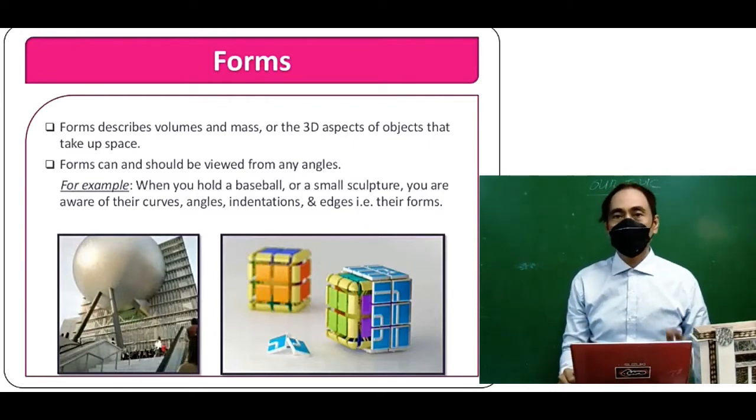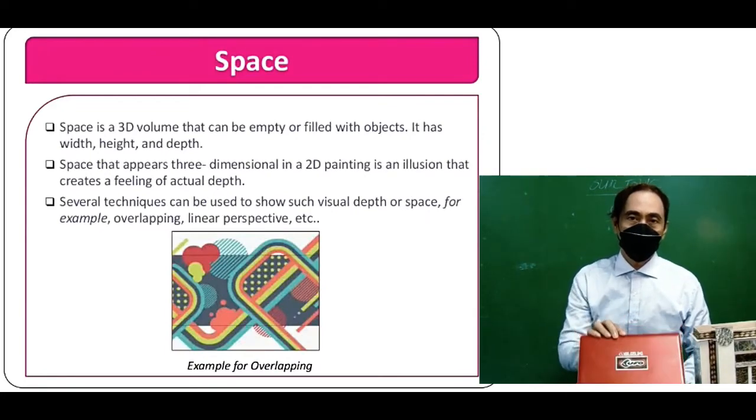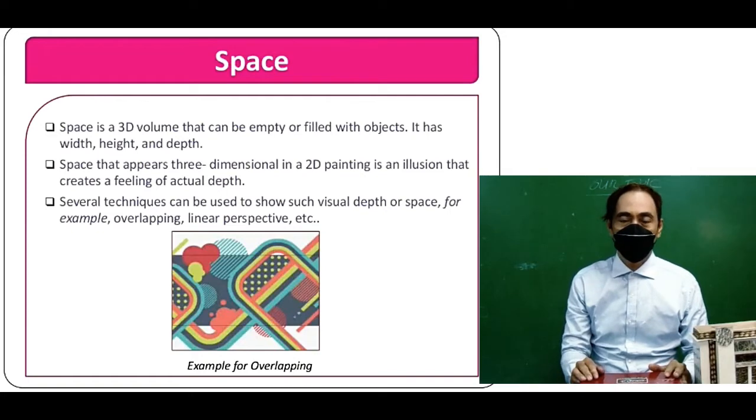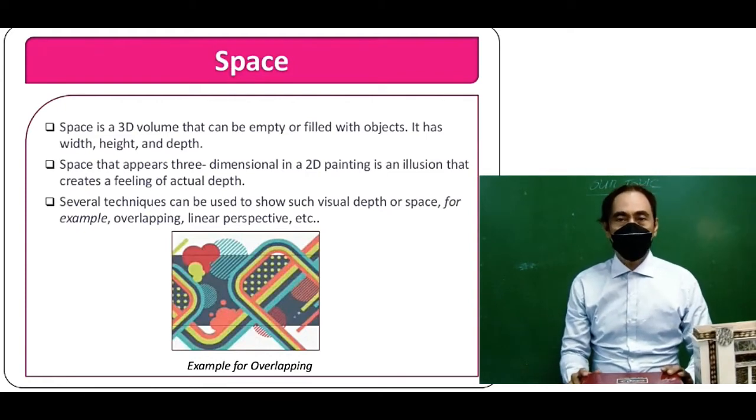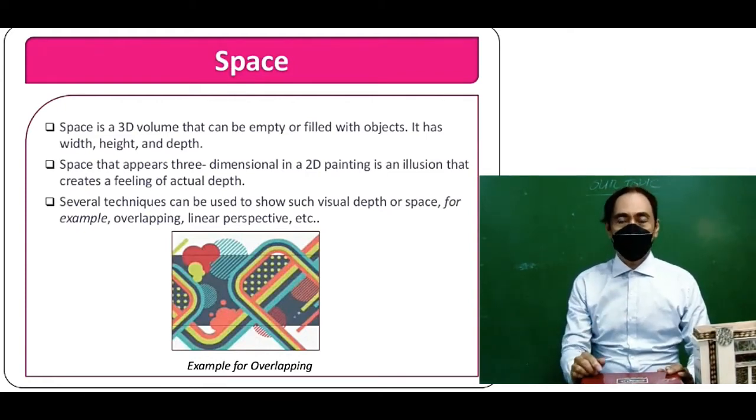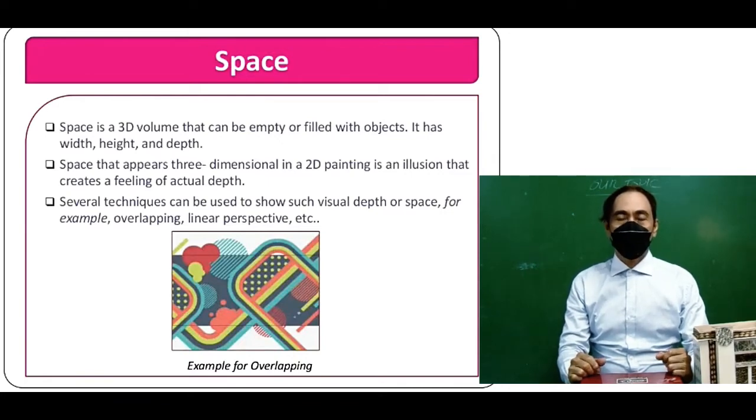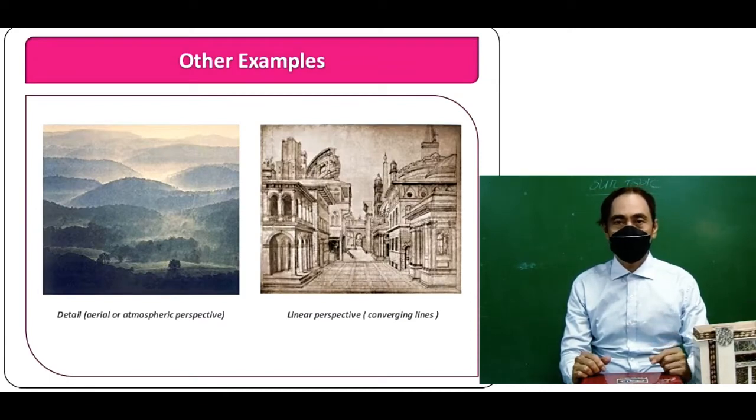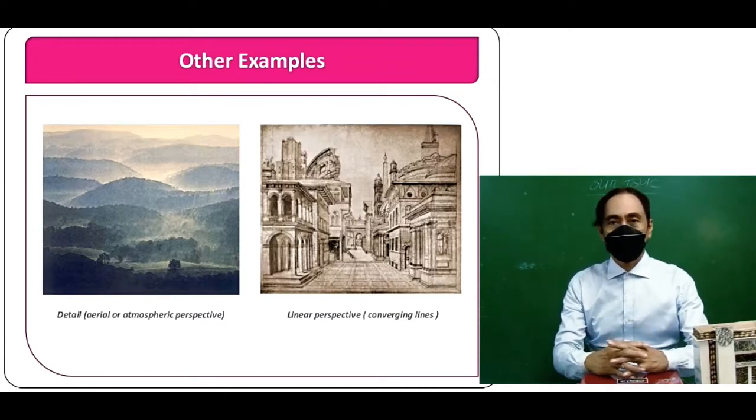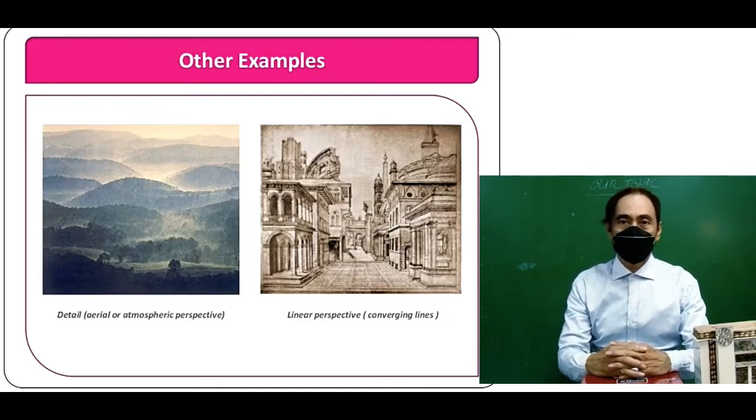Space is a 3D volume that can be empty or filled with objects. It has width, height, and depth. Space that appears three-dimensional in 2D painting is an illusion that creates a feeling of actual depth. Several techniques can be used to show such visual depth or space, for example overlapping, linear perspective, and aerial or atmospheric perspective.